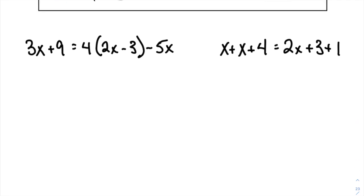In the first example, I see all kinds of stuff. First, I see distributing. So I'm going to distribute right off the bat, because that is a good strategy for me. So I didn't touch the 3x plus 9. 4 times 2x is 8x. 4 times minus 3 is minus 12. And minus 5x didn't get touched yet.